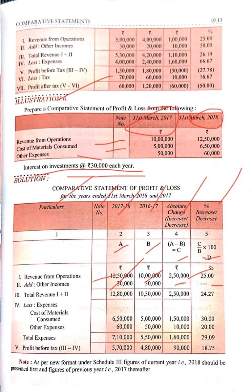Cost of material consumed: current year is 6 lakh 50,000 and previous year is 5 lakh, so the difference is 1 lakh 50,000. Other expenses: current year is 60,000 and previous year is 50,000, so the difference is 10,000. The total of expenses comes to 12 lakh.